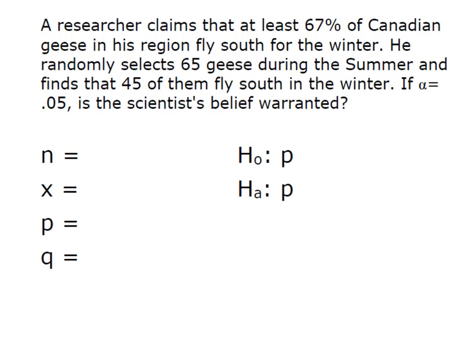So we're going to get the information that we need out of the question. So we had a sample size of 65 and we had X, or the number in our sample that possessed the characteristic we were interested in, was 45. The population proportion or believed population proportion is 67%, and for a proportion we also need Q, and we know that's 0.33 because P plus Q always equals 1.